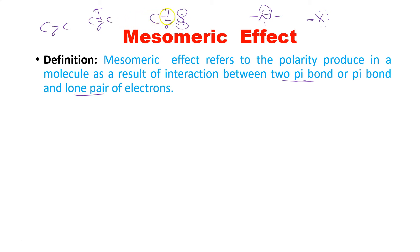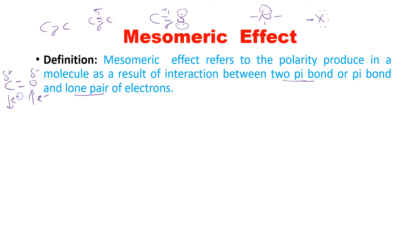Whenever there is a pi bond, the pi bond will break very first — not the sigma bond. This carbon has a delta positive charge partially and this carbon has a delta negative charge, because the electronegativity of oxygen is higher compared to carbon, so carbon has less electronegativity compared to oxygen.